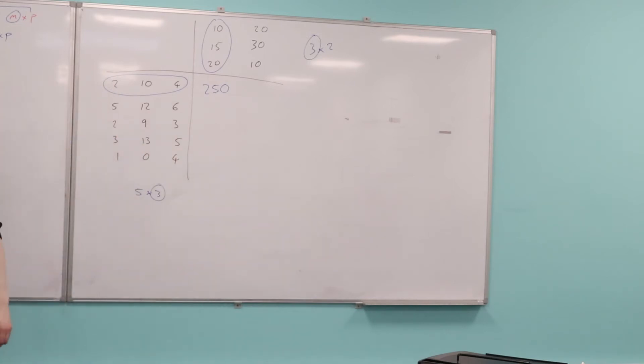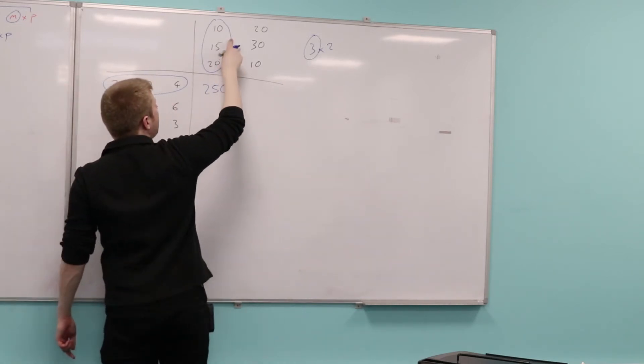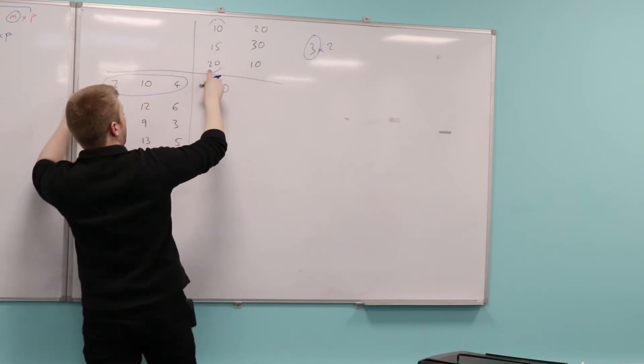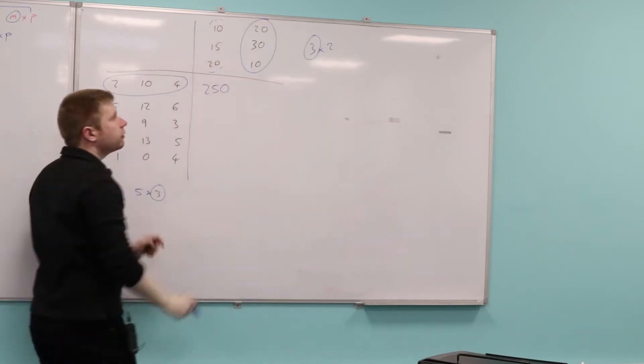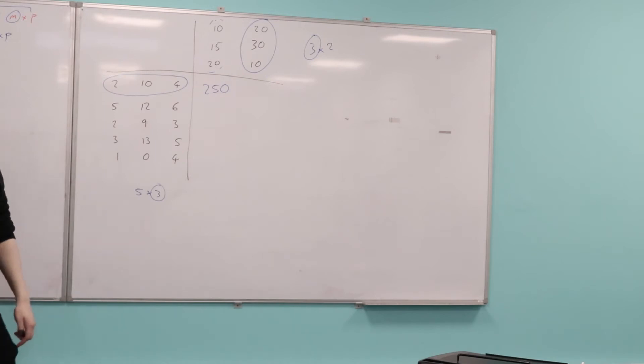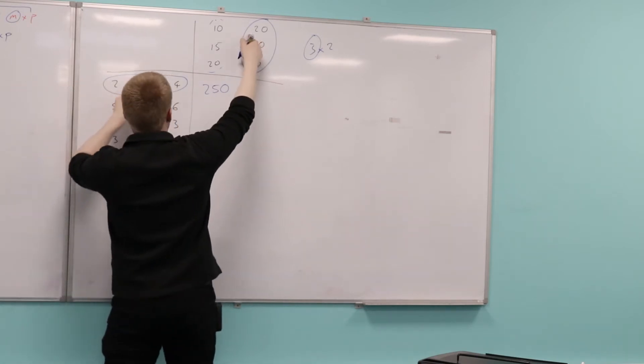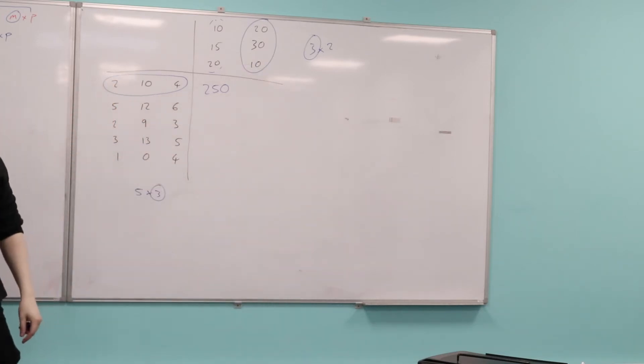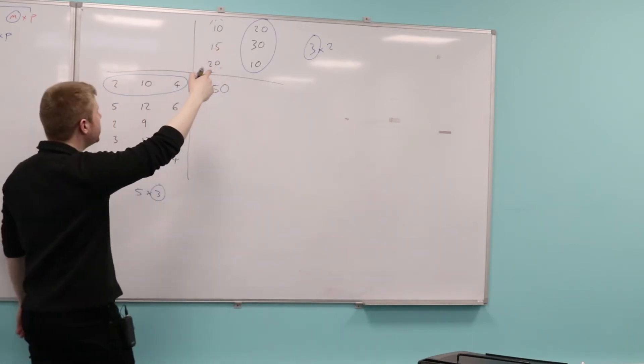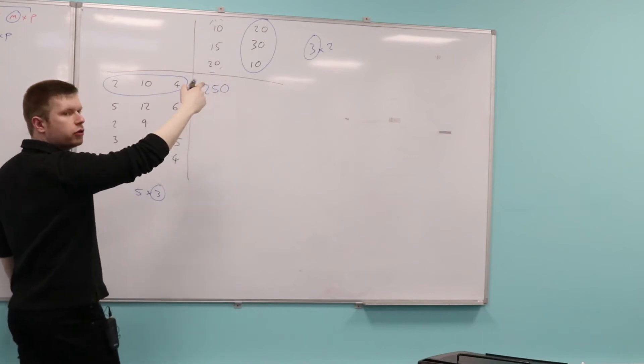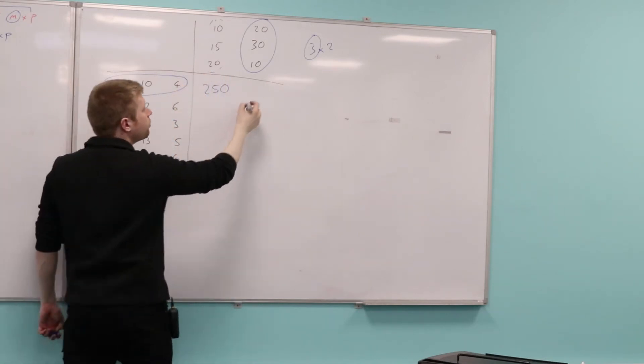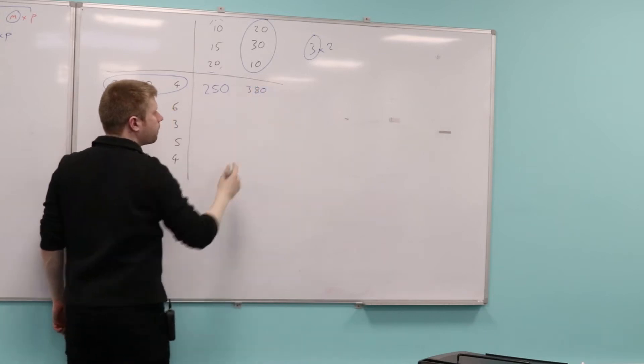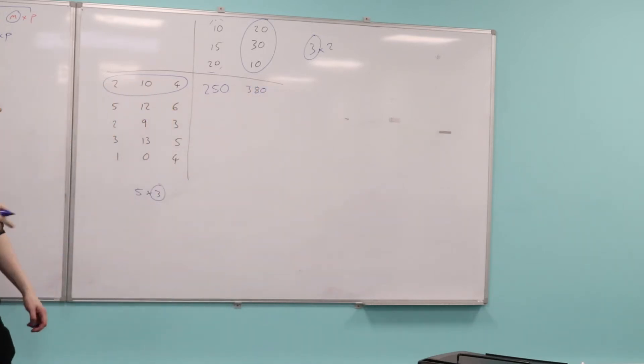Does that make sense how I found the element? To find this element here, I would be looking still at this row, but this time at this column here. And multiply the corresponding elements together: 2 times 20 plus 10 times 30 plus 4 times 10, which is... 2 times 20 is 40, 10 times 30 is 300, so it's already too big. And then 4 times 10, so it should be 380, right? Yeah, so just be careful of that.